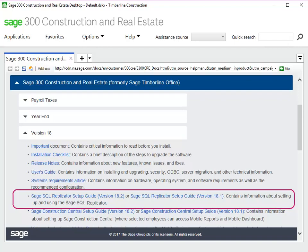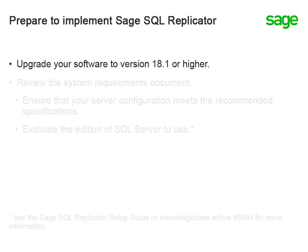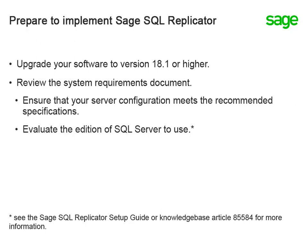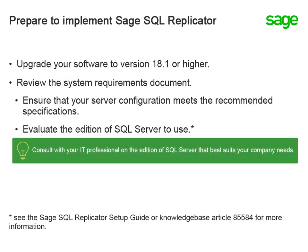Make sure to use the version of the guide that matches the version of your software. SQL Replicator requires a dedicated instance of SQL Server, which can be installed on the accounting server or on a different server. Depending on the size of your company folder, you may be able to use SQL Server Express, which comes at no extra cost, instead of SQL Server Standard Edition or SQL Server Enterprise Edition, which are purchased separately. Refer to the System Requirements document or the Setup Guide to determine if you're able to use SQL Server Express. We recommend that you consult with your IT professional on the edition of SQL Server that will best suit your organization based on the features, the size of your database, and processing needs.